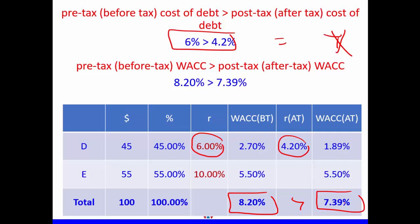To summarize: before-tax WACC will always be larger than after-tax WACC because we use the after-tax cost of debt in the calculation. They will only be equal if there are no taxes, since multiplying by (1 − 0) = 1 leaves the cost of debt unchanged.